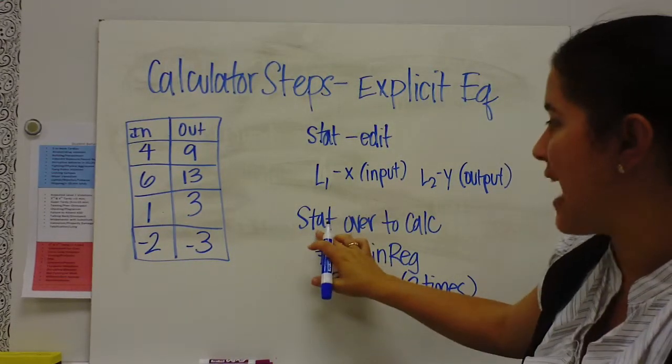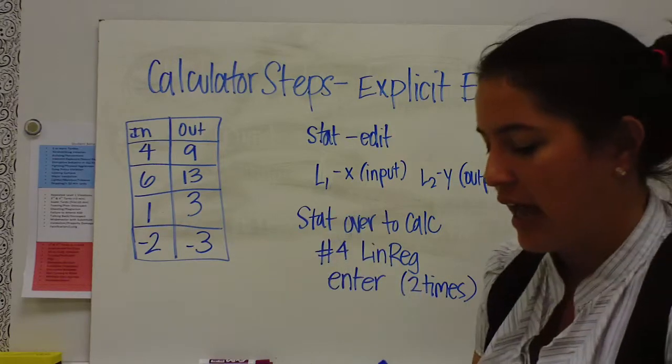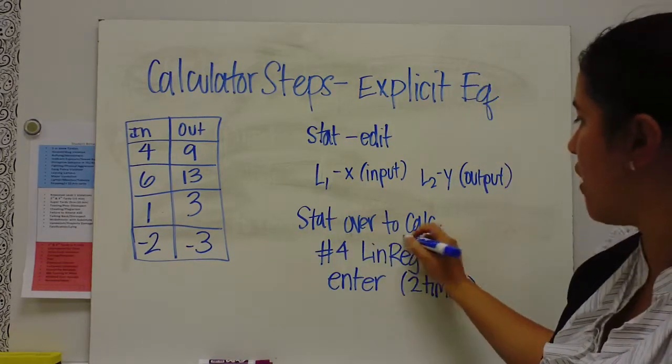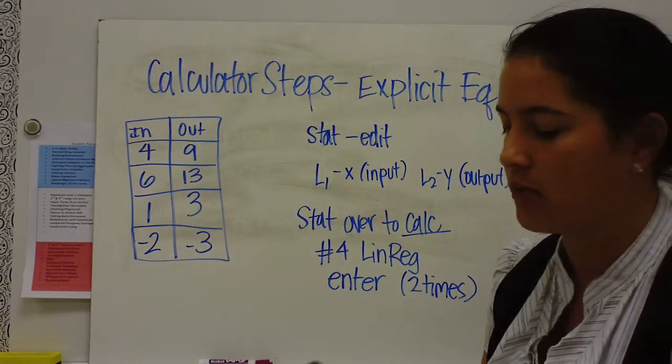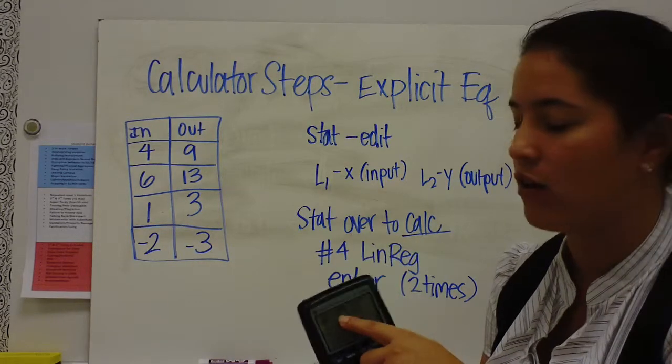Once you do that, you're going to press stat again, and you're going to arrow over to calc, the second option. So you're just going to arrow over 1 to calc.